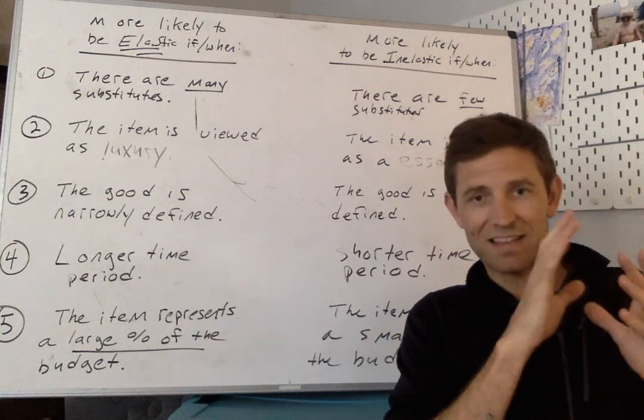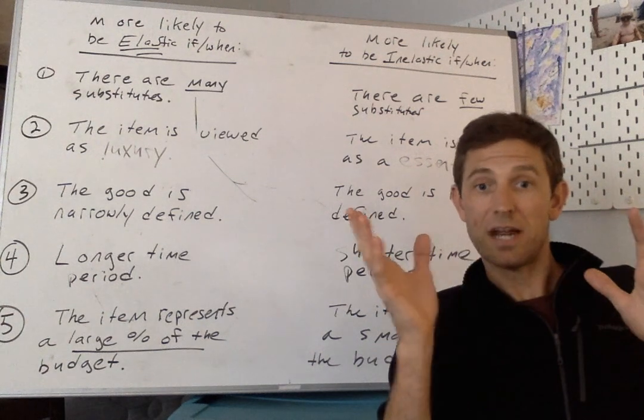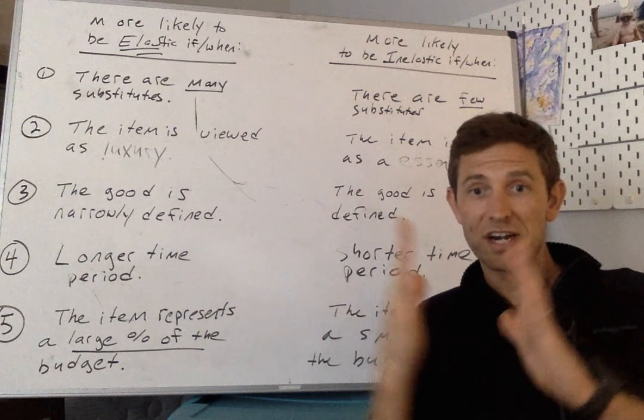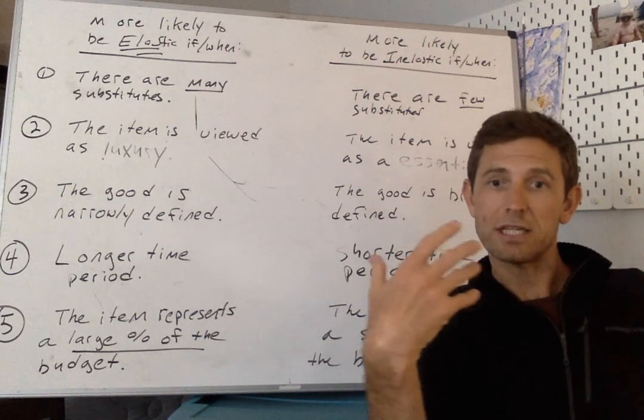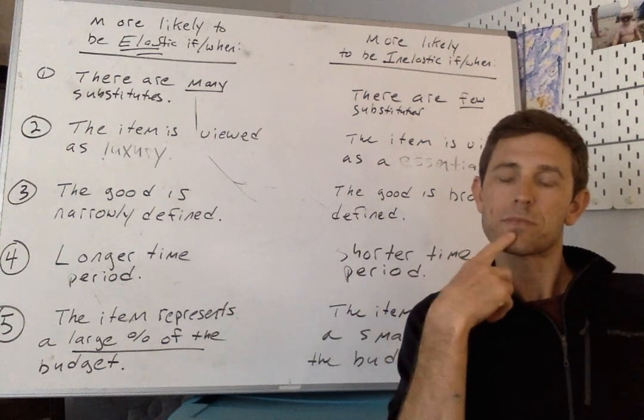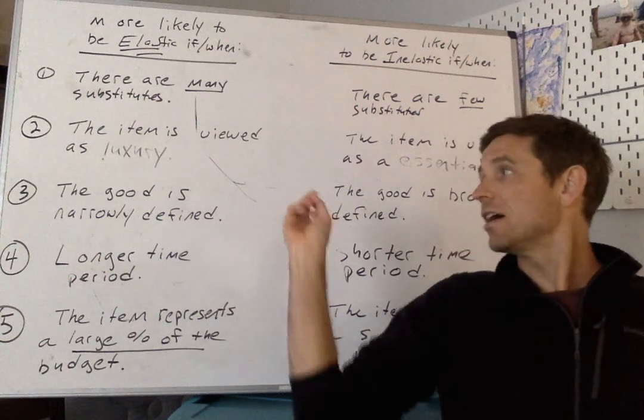In contrast, if I define the same product, but I say that the product here is In-N-Out, meals from In-N-Out. Well, that's much narrower, right? It includes only meals that come from that one particular restaurant. And so the way that we define the good, narrowly or broadly, affects the elasticity.